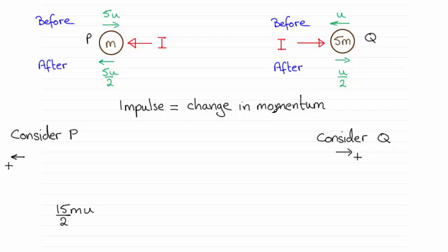Now remember that impulse equals change in momentum. So if we're dealing with P, we'll set that impulse as being I. And that's going to equal the change in momentum, so it's the final momentum minus the initial momentum.